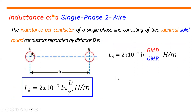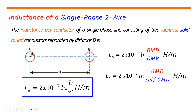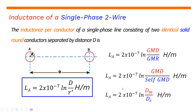So some books use GMD for the geometric mean distance, or the geometric mean radius. Some other books also use GMD over self-GMD. But it's all the same, referring to one thing. GMD is the geometric mean distance and GMR is the geometric mean radius. Also, the self-GMD is also the geometric mean radius, or simply R prime. Some books also use D sub M, or the mutual distance, divided by D sub S, or the self-GMD.